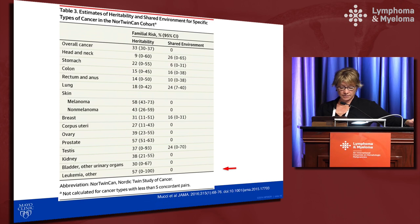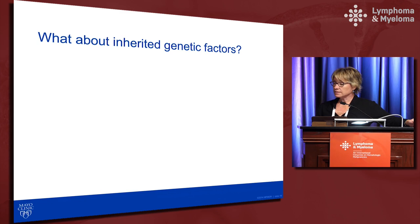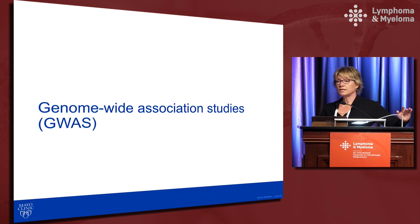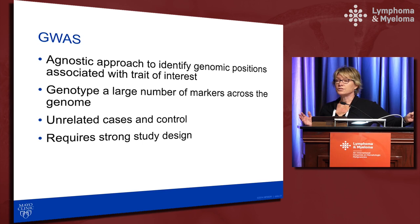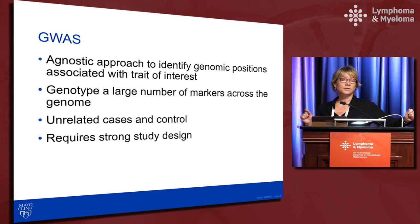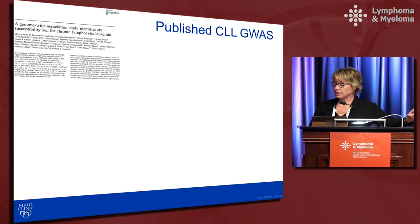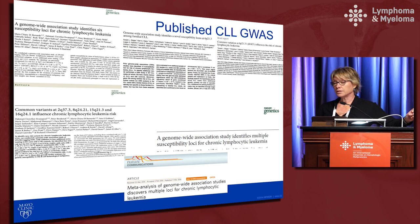Genome-wide association studies (GWAS) have been a very successful tool for identifying genomic regions associated with disease. This agnostic approach genotypes 500,000 to over a million positions across the genome and tests each position for association with disease using unrelated cases and controls, requiring stringent significance thresholds and independent validation. For CLL, a number of GWAS studies have been done; the largest, with colleague Philip Law, combined 4,486 CLL cases and just over 13,000 controls.